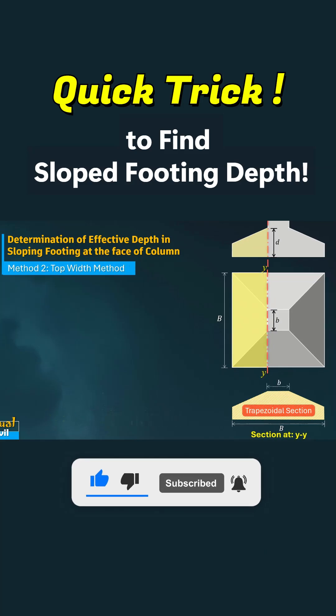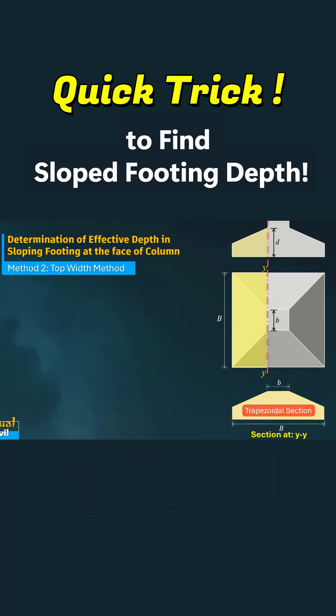In the top width method, we calculate the effective depth of the footing by considering the top width of its trapezoidal section, specifically the portion parallel to the section line.